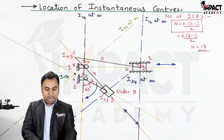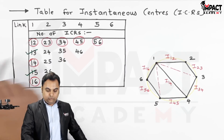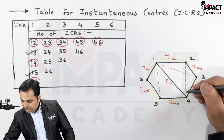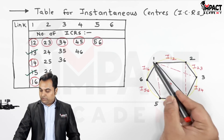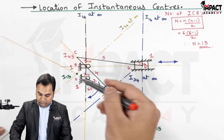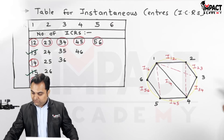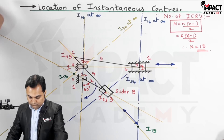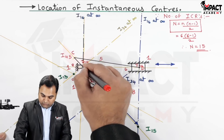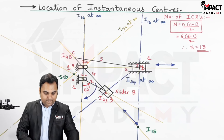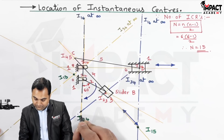For I24, we use triangles 1-2-4 and 2-3-4. I12 and I14 are already joined by a light line. For the second set, we connect I23 and I34. Extending the line through I23 and I34 to cut the line through I12 and I14 gives us I24.